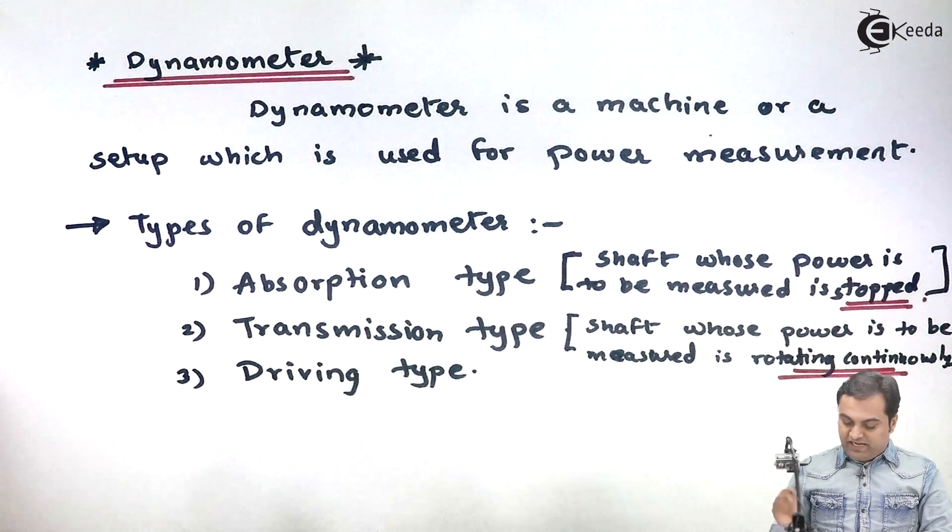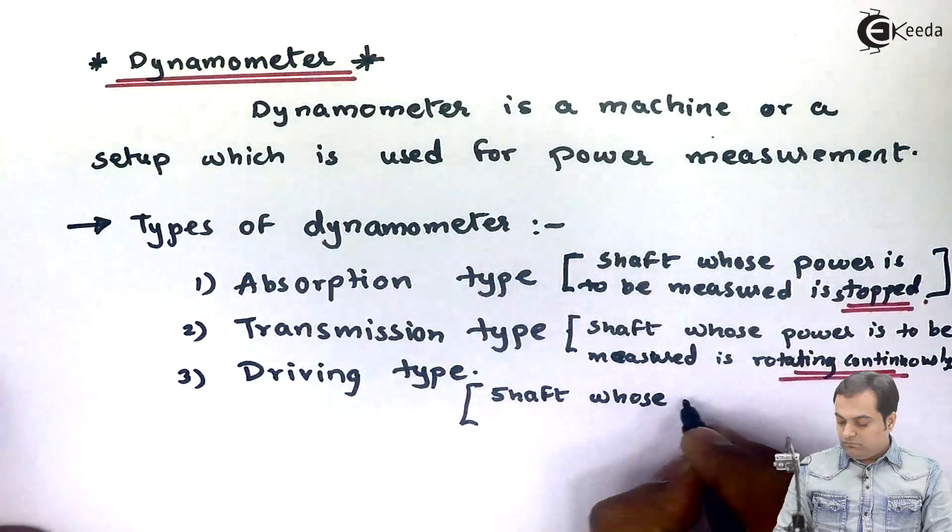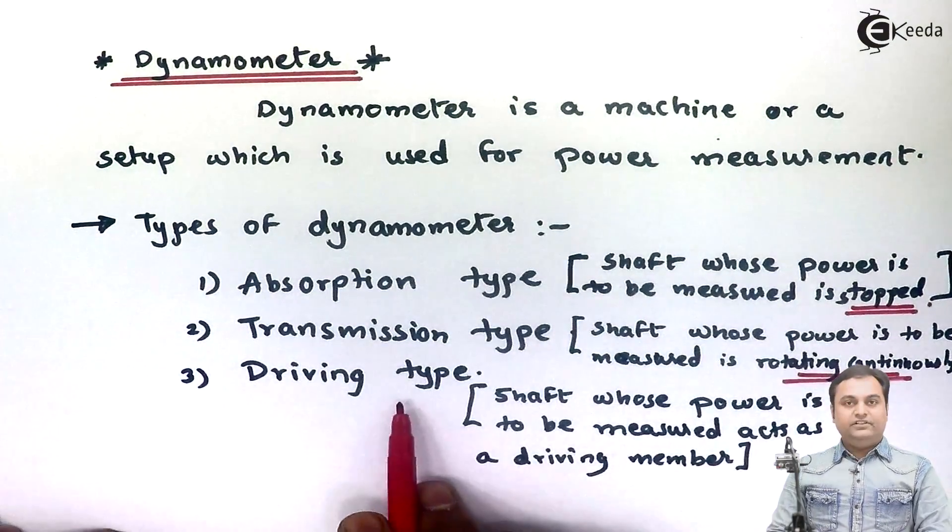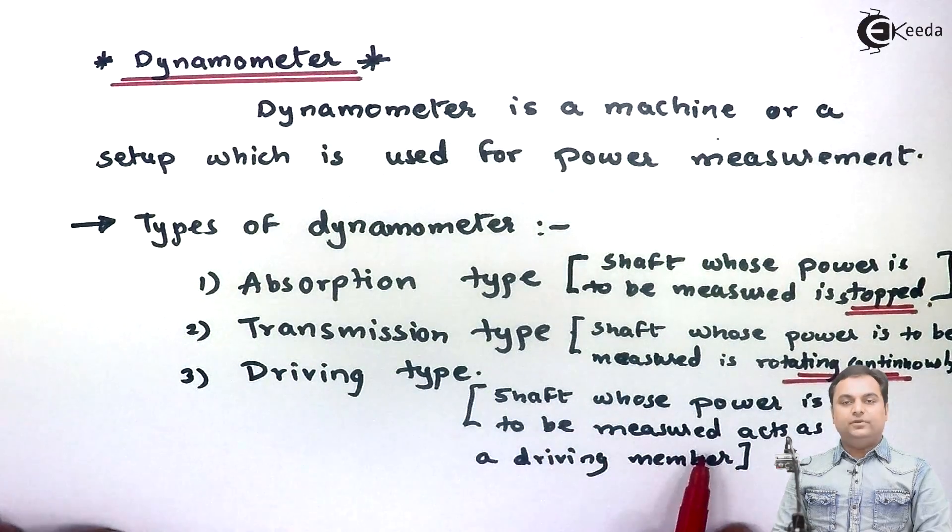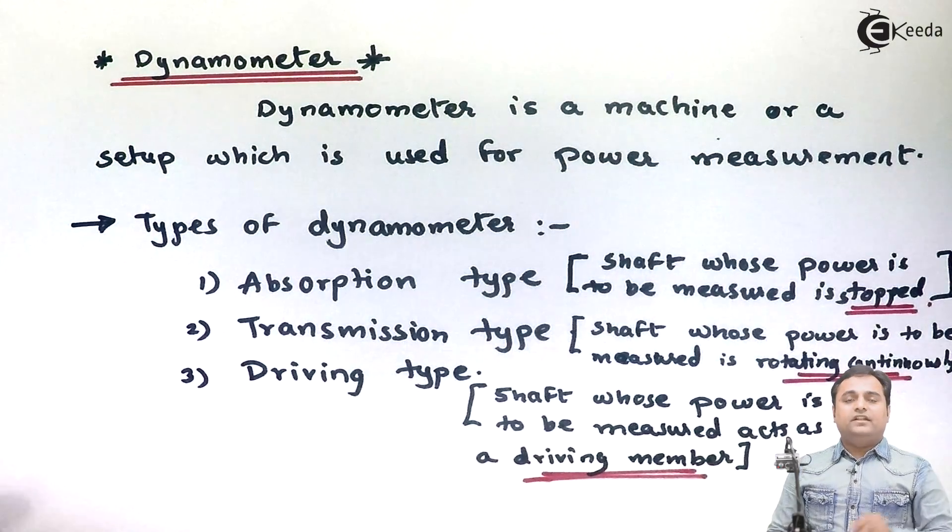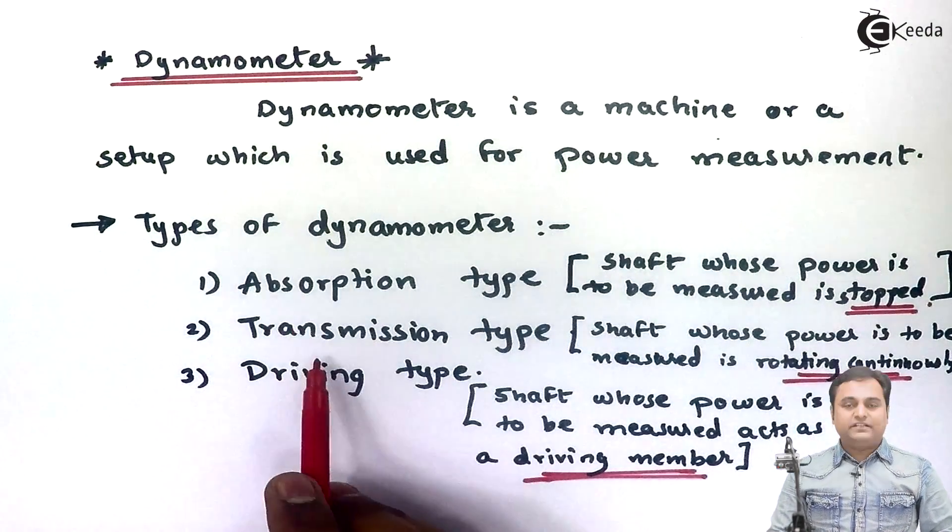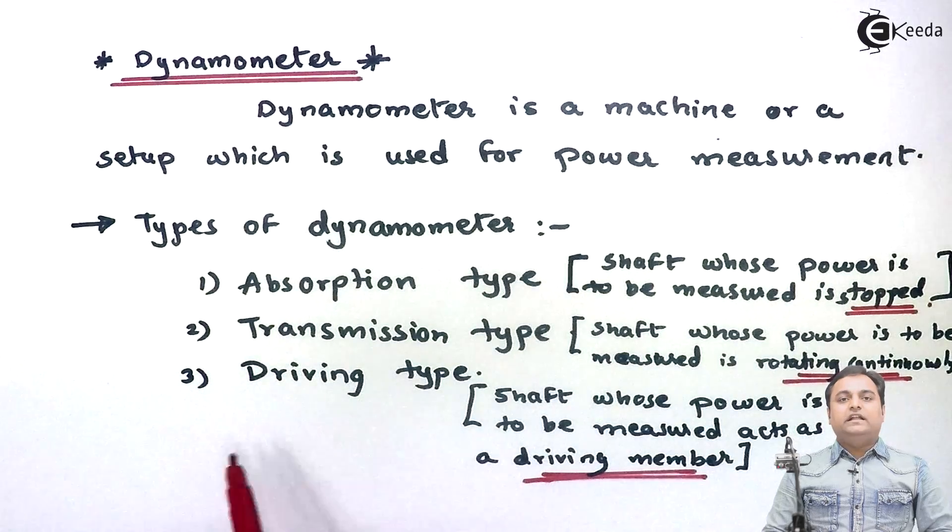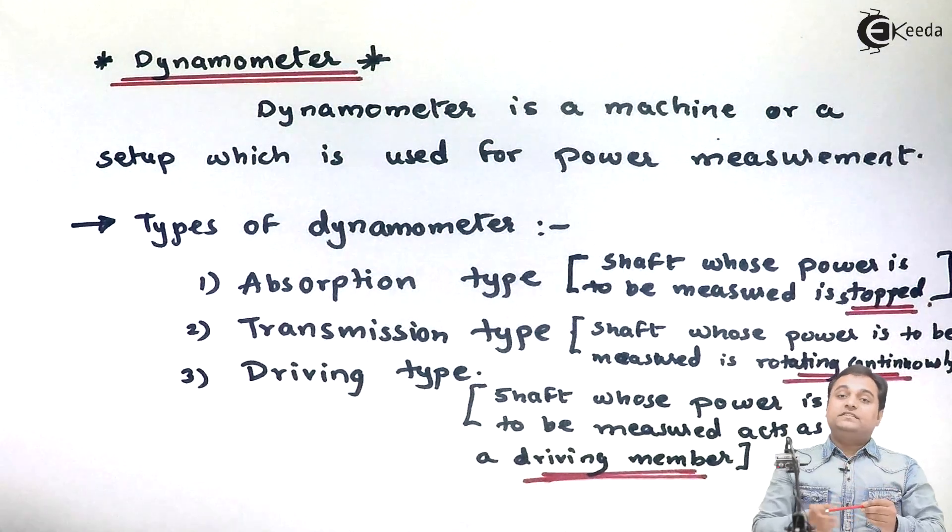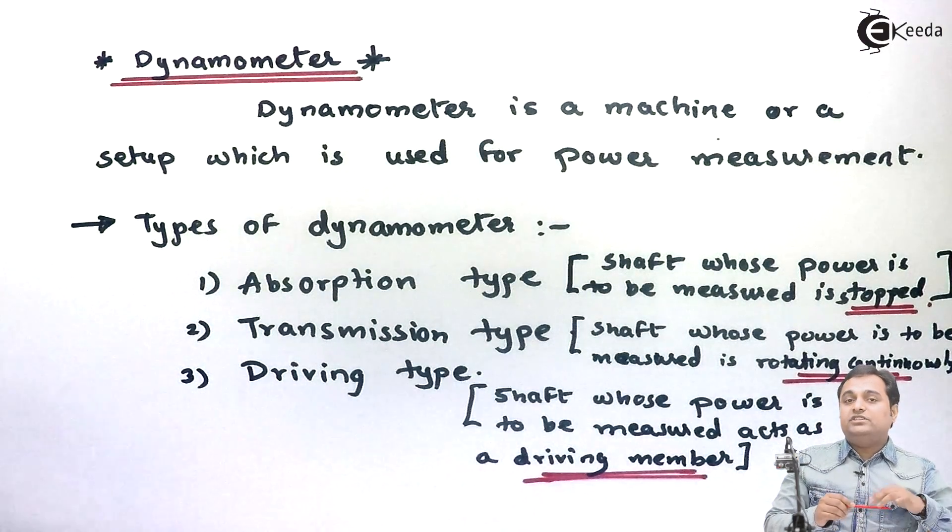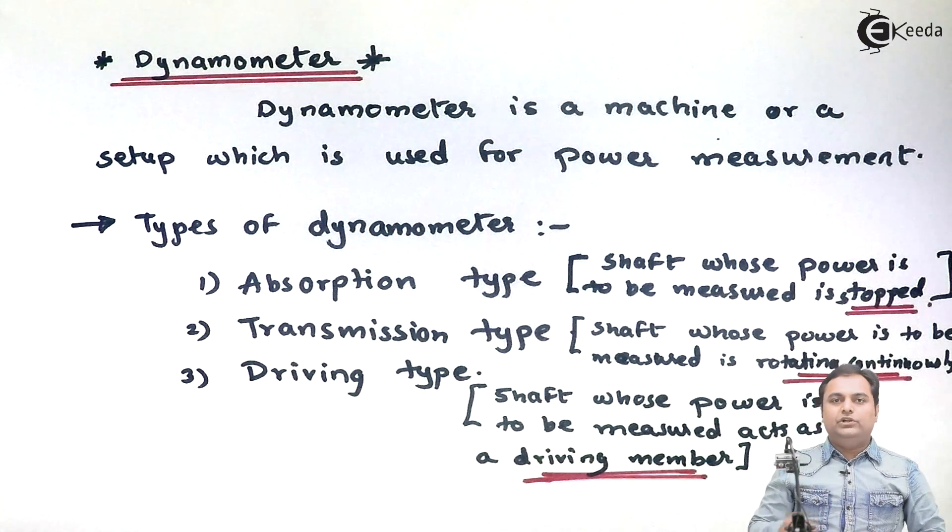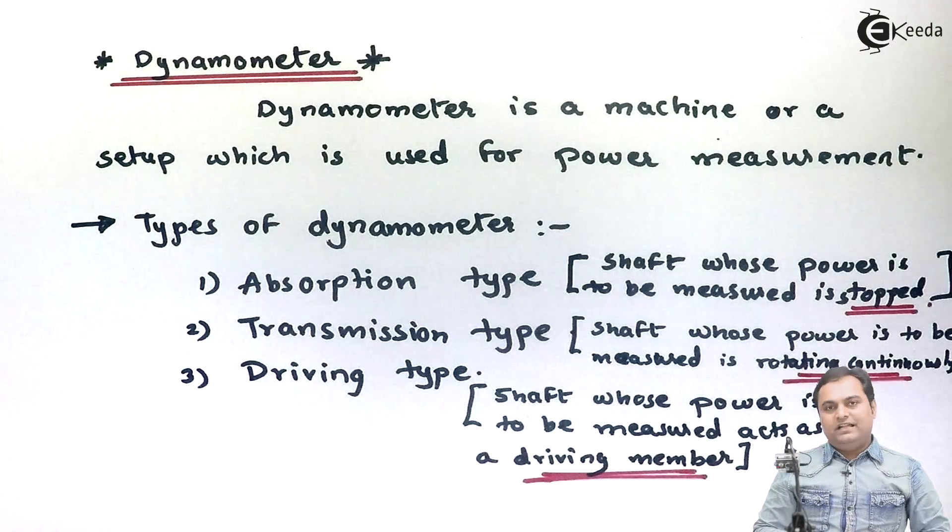Then the last type is driving type. In driving type, the shaft whose power is to be measured acts as a driving member which actuates some other device. We will see this once we go into the detail of the types of dynamometers.